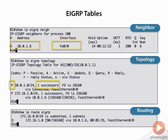You'll notice it says one successor. A successor is the best path, and the feasible distance to that successor is 28,160 — that's the composite metric. For the other route, 172.16.1.0, there's also one successor, and the feasible distance is 156,160, which we see on the left-hand side of the topology output.